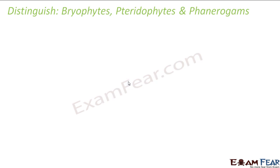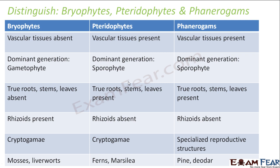Distinction between bryophytes, pteridophytes, and phanerogams. Vascular tissues are absent in bryophytes but present in pteridophytes and phanerogams. Bryophytes have little body differentiation; pteridophytes have better body differentiation with vascular tissues; phanerogams have better body differentiation with vascular tissues and specialized reproductive structures. Considering the life cycle, the dominant generation in bryophytes is the gametophyte, whereas it is the sporophyte in pteridophytes and phanerogams.